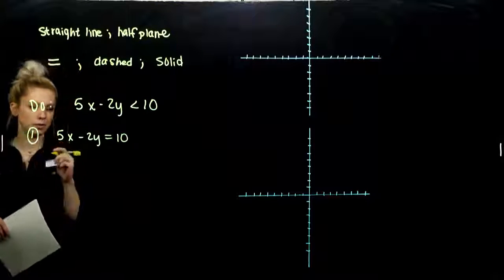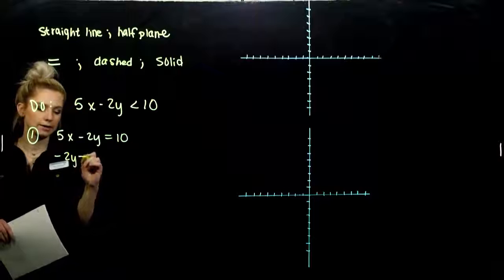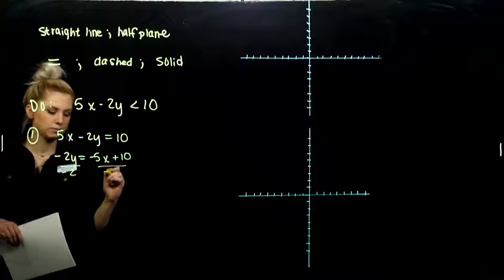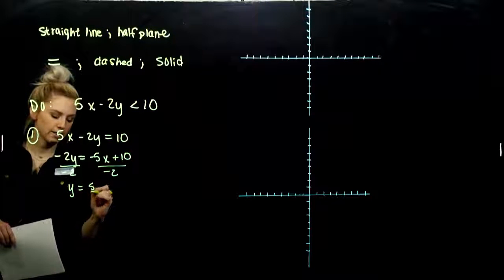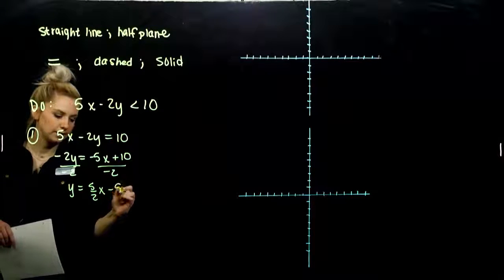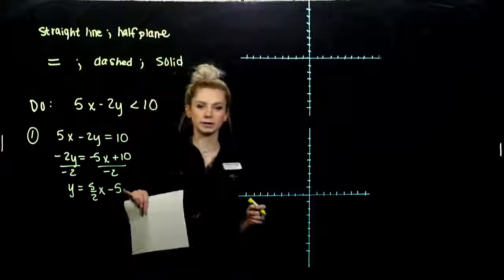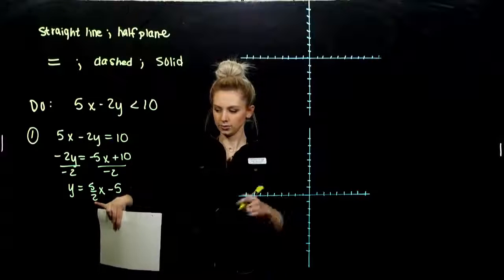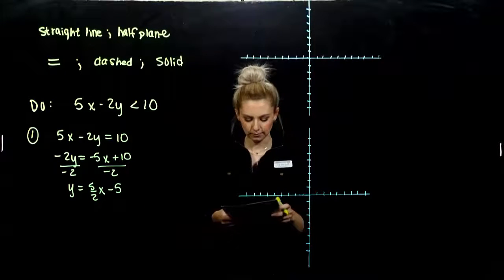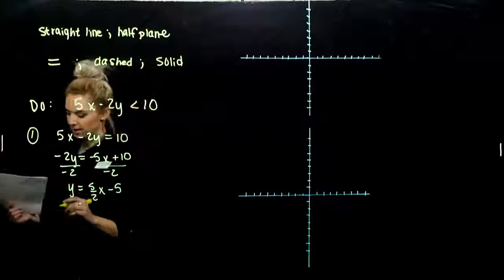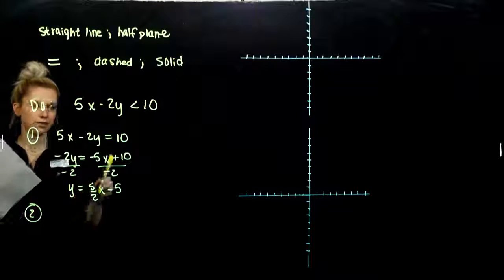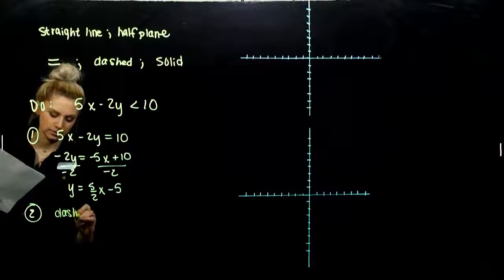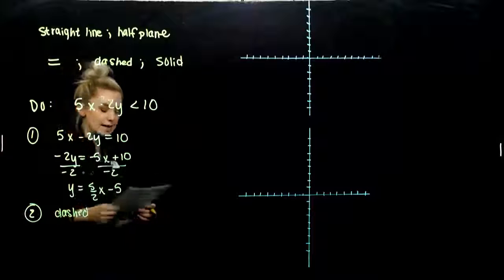If I want y on its own, I need to subtract 5x from both sides and divide by negative 2. So y equals 5/2 x minus 5. This is our boundary line going through y-intercept (0, −5), rising 5 and running 2 from there. We need to determine: is it going to be solid or dashed? Looking back at our original inequality, we're going to have a dashed line since we can't include the points on the boundary.